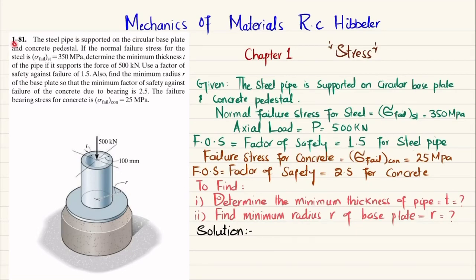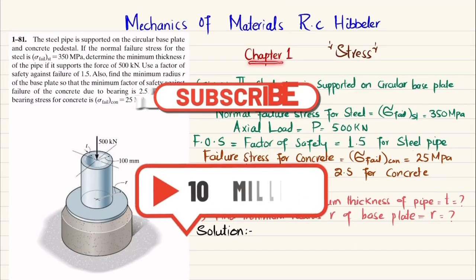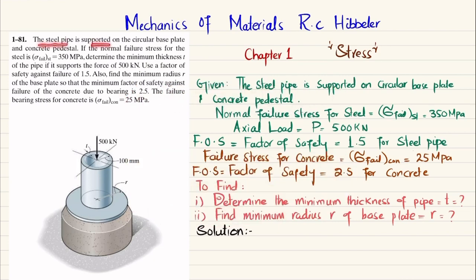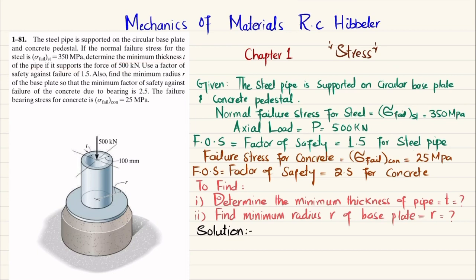Welcome back. Problem 1-81, taken from Chapter 1 on stress from the book Mechanics of Materials by R.C. Hibbeler. The statement: a steel pipe is supported on a circular base plate and concrete pedestal. If the normal failure stress for steel is 350 MPa, determine the minimum thickness t of the pipe if it supports a force of 500 kN, using a factor of safety against failure of 1.5. Also find the minimum radius r of the base plate so that the minimum factor of safety against failure of concrete due to bearing is 2.5.